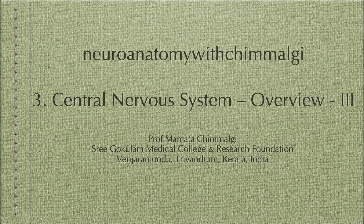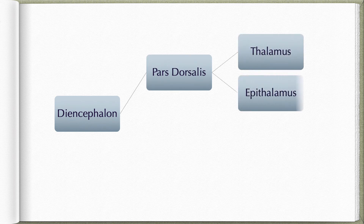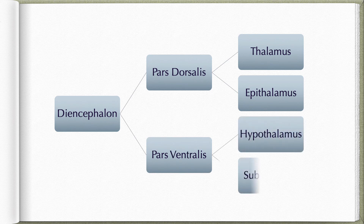In this final segment on the central nervous system overview, let us consider a few basic details about the diencephalon and cerebrum. Diencephalon is made up of two main parts: pars dorsalis, which is made up of the thalamus and epithalamus, and pars ventralis, which is made up of the hypothalamus and subthalamus. Pars dorsalis and pars ventralis are separated by the hypothalamic sulcus.